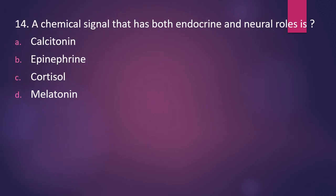Question number fourteen: a chemical signal that has both endocrine and neural roles — is it calcitonin, epinephrine, cortisol, or melatonin? The correct answer is option B, epinephrine, which functions both as an endocrine signal and has neural roles.